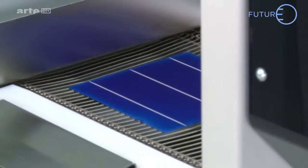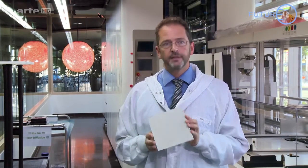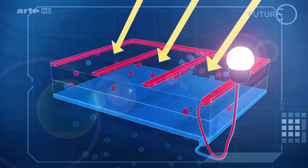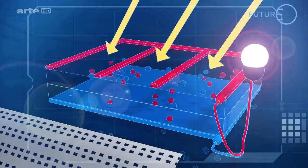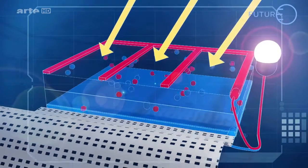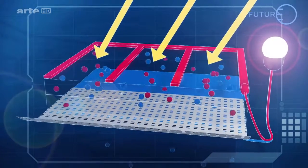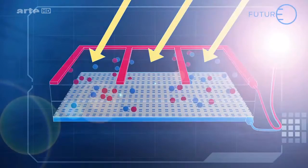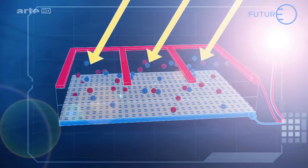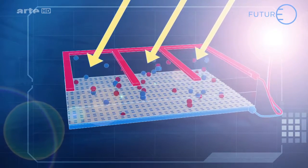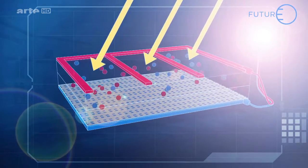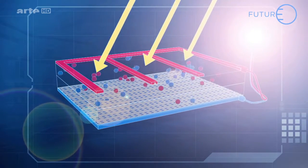Dans une cellule photovoltaïque standard, une grande partie des photons est perdue par la face arrière. Ils sont absorbés par la couche métallique. Dans notre conception, nos cellules ont aussi une couche métallique à l'arrière. Mais entre cette couche métallique et la couche de silicium, nous avons rajouté une couche diélectrique. Cela rend plus efficace la récupération des électrons et améliore la performance de la cellule.